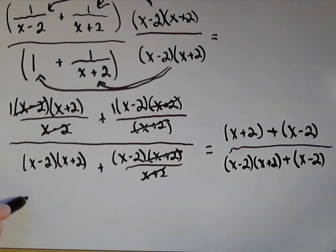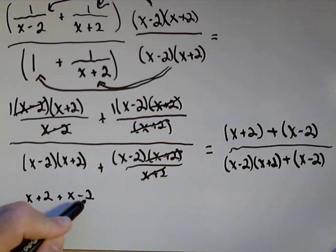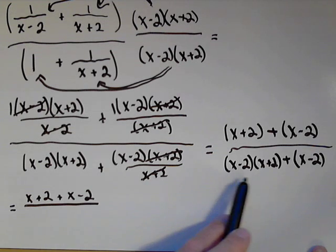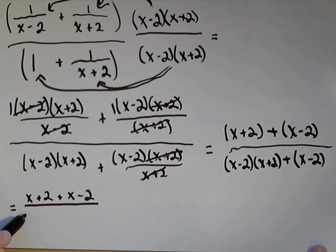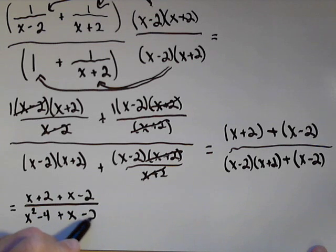We can drop the parentheses on top. I have x plus 2 plus x minus 2. So, nothing to distribute on the second set of parentheses. And, on bottom, I'm gonna foil these out. We have difference of squares here. So, that's gonna be x squared minus 4. Then, I can drop the parentheses on the back part. x plus x minus 2.